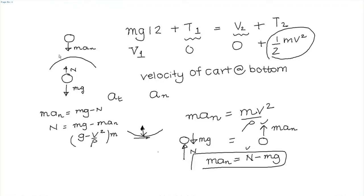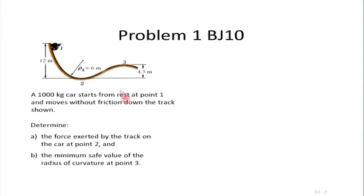If the rails are not guided, the surface can only provide a reaction in one direction. When the normal reaction N becomes 0, the vehicle will lose contact and become unstable. So the minimum radius we can have occurs when g minus v squared divided by rho equals 0, or v equals the square root of g times rho. That is the solution — this is why there is a critical curvature and we cannot have a very sharp turn.